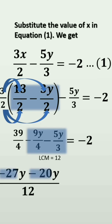9 times 3 is minus 27. 5 times 4 is minus 20y by 12. Transpose 39 by 4 to RHS. So, minus 2 minus 39 by 4 here.